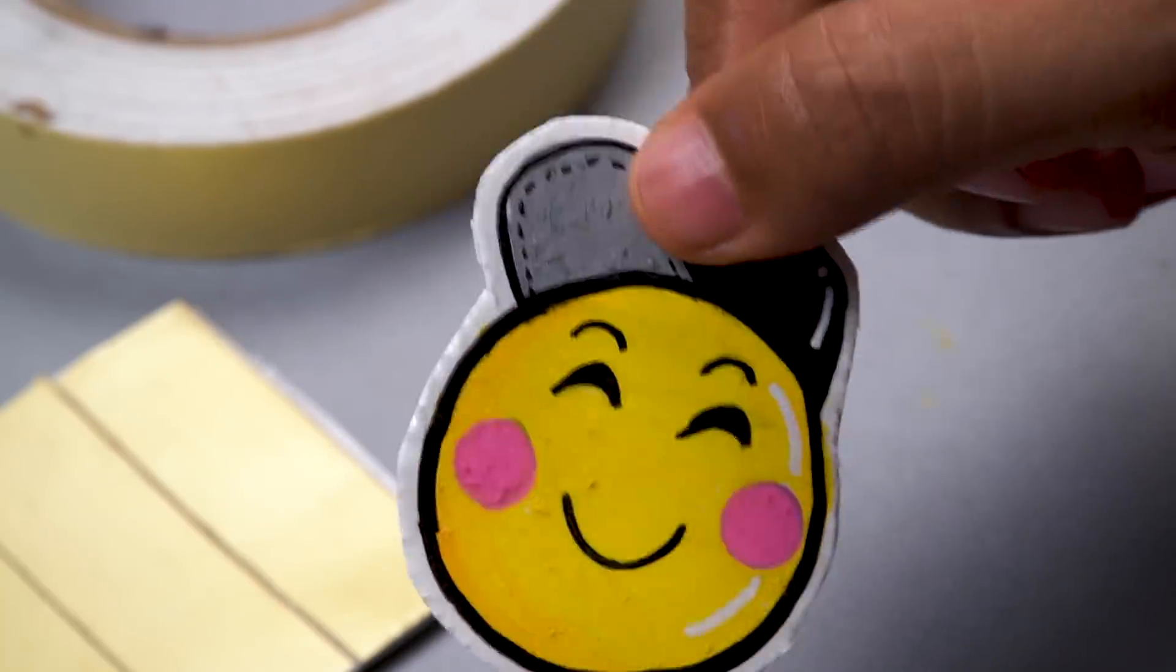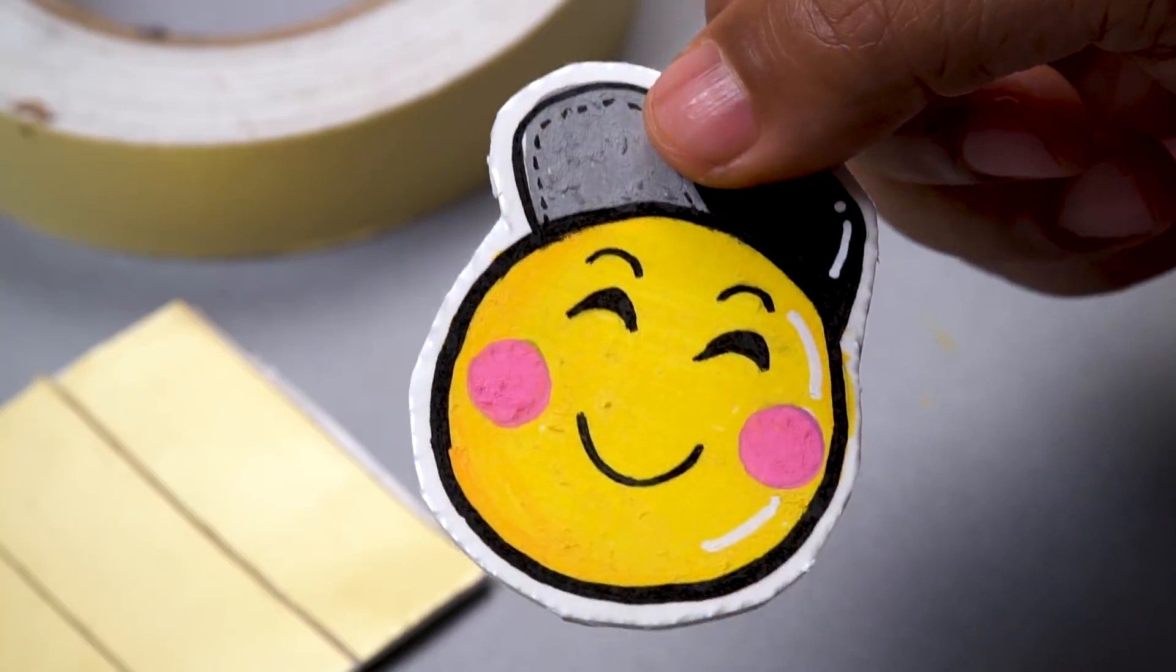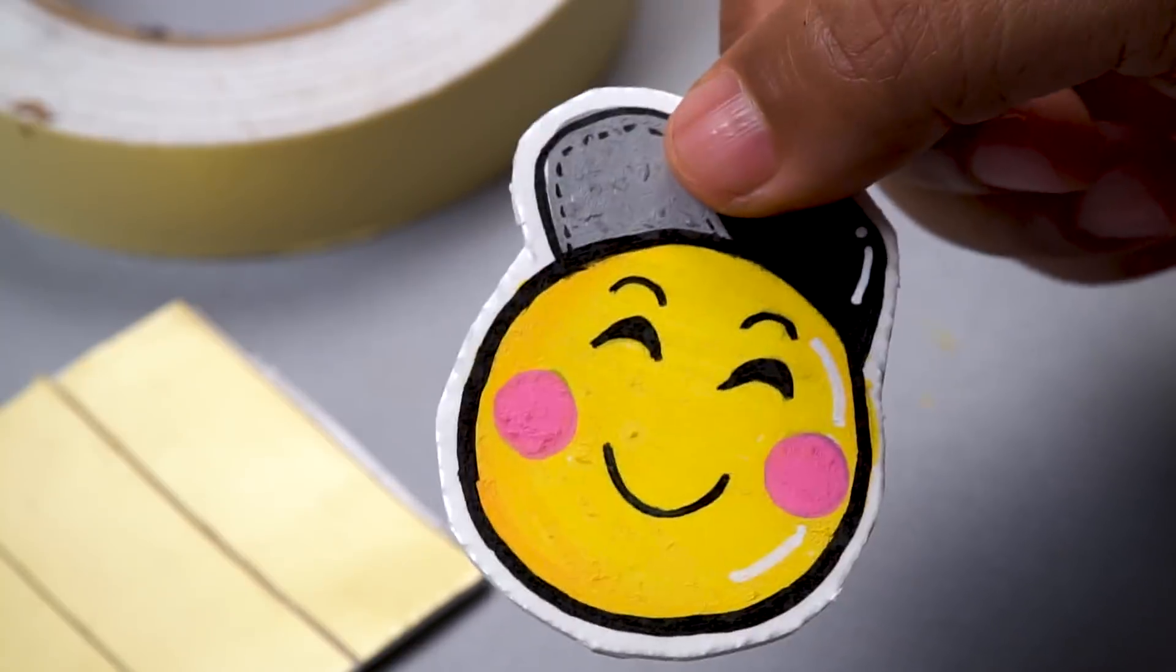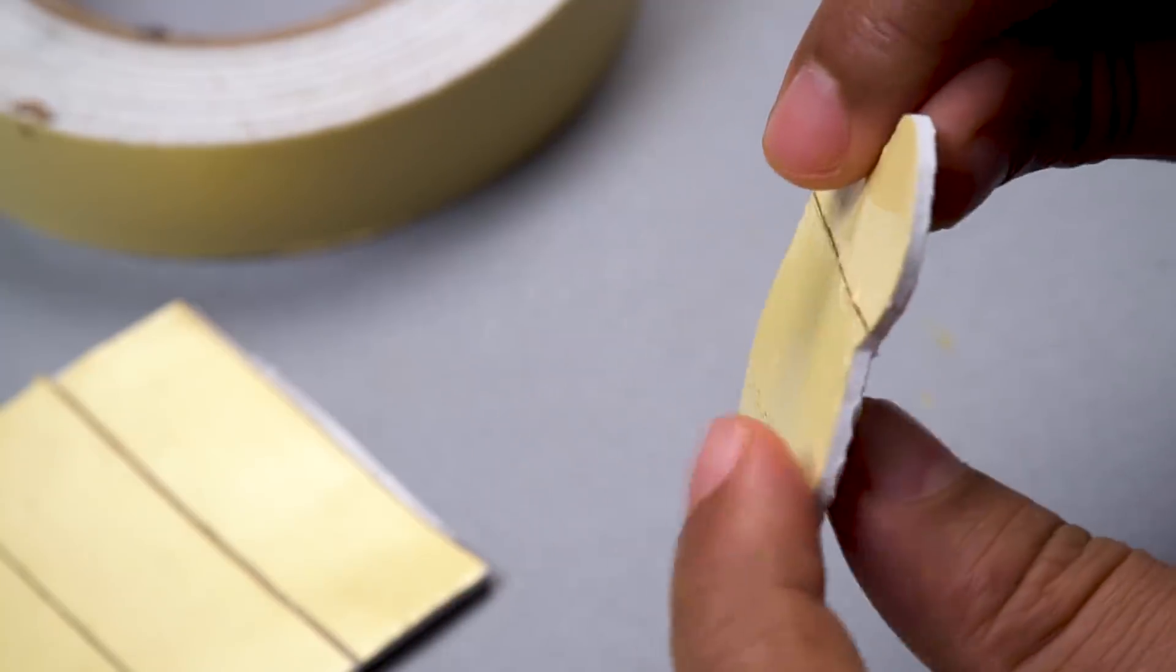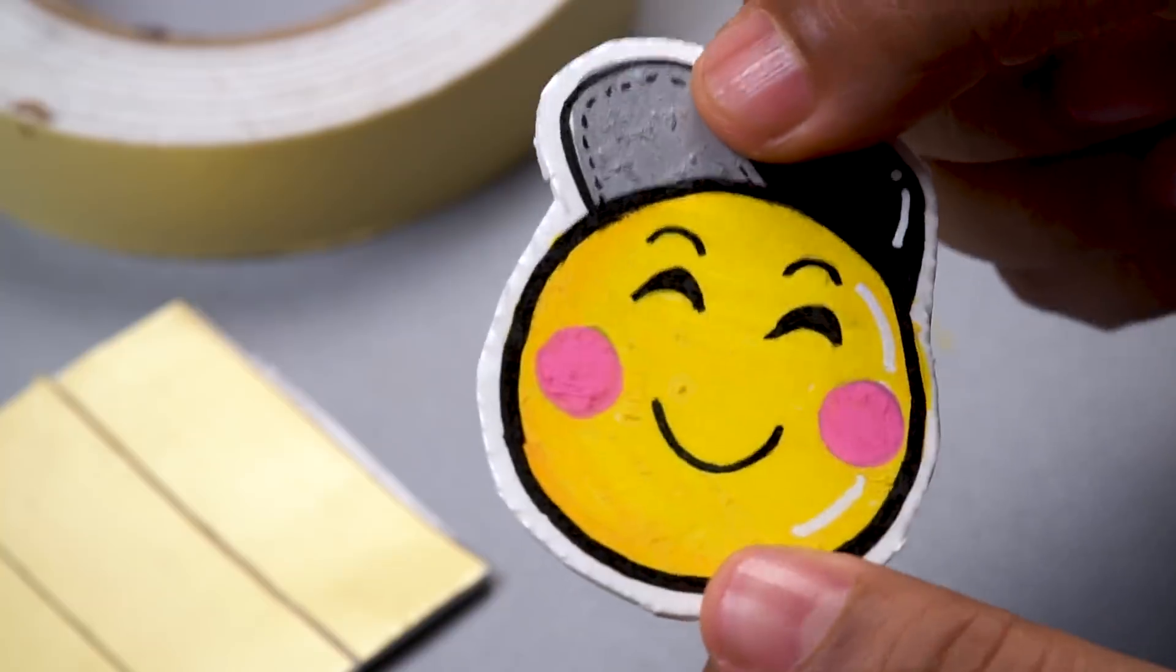There you go, you can see I have cut the first one. Because of the foam tape, it's slightly thick. So when you stick it on any surface, it will have a slight emboss effect. I think it looks pretty cool. It has a shiny glossy finish on top and a sticky back. So let's do the rest.